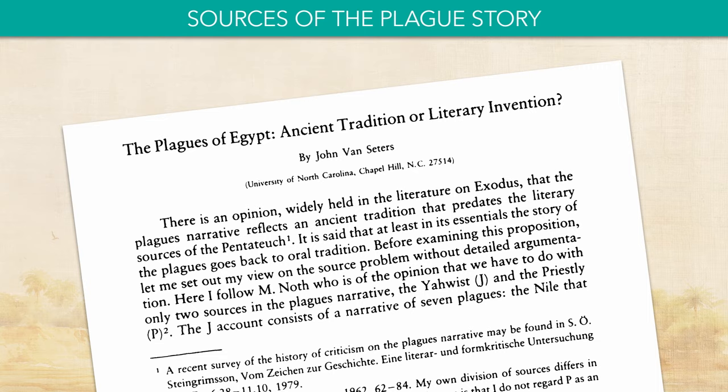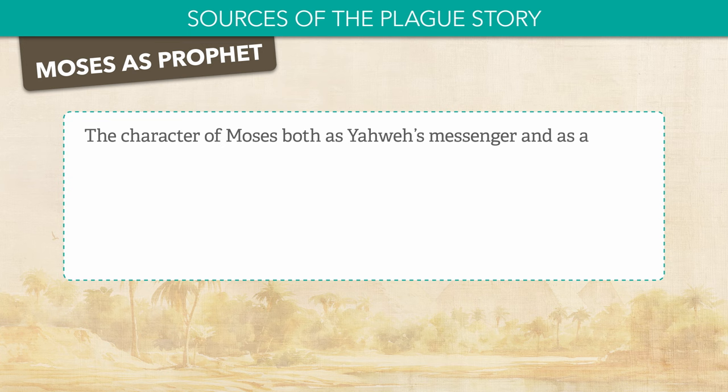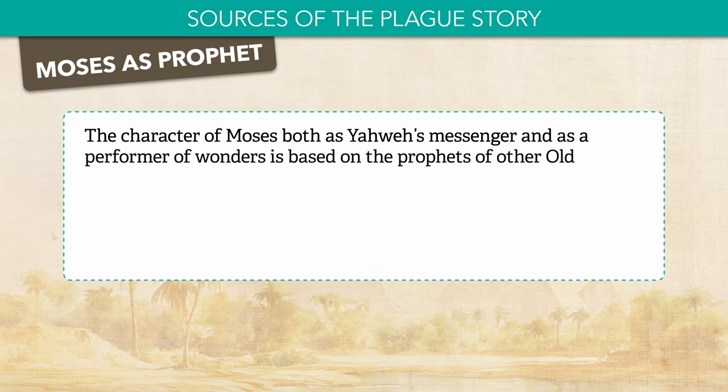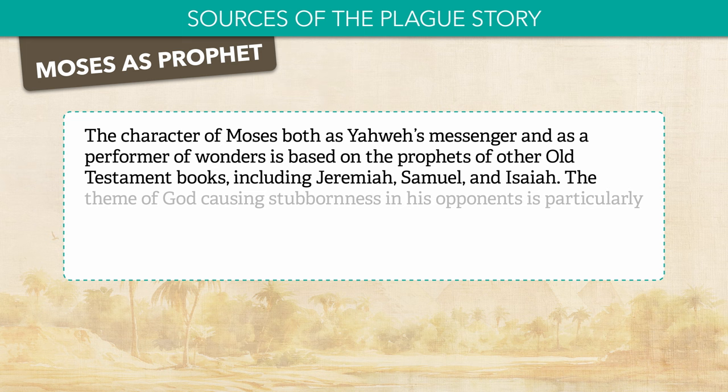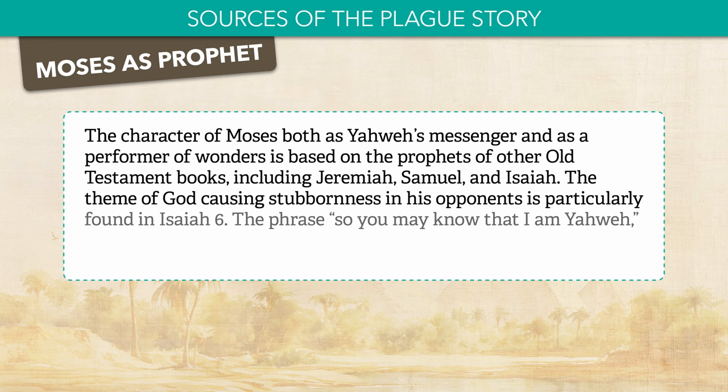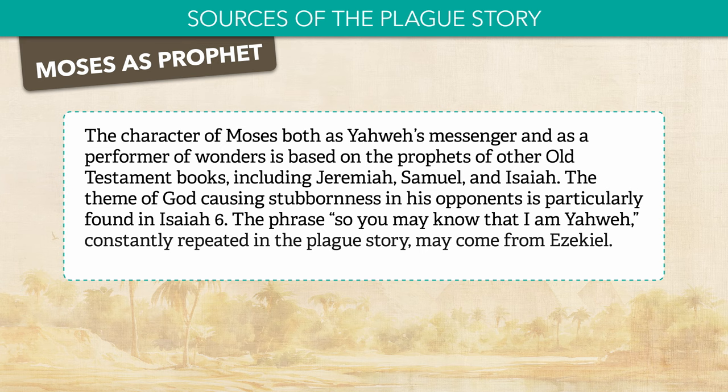Moses as prophet: The character of Moses both as Yahweh's messenger and as a performer of wonders is based on the prophets of other Old Testament books, including Jeremiah, Samuel, and Isaiah. The theme of God causing stubbornness in his opponents is particularly found in Isaiah 6. The phrase 'So you may know that I am Yahweh,' constantly repeated in the plague story, may come from Ezekiel.